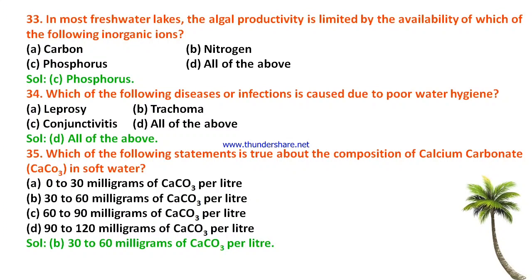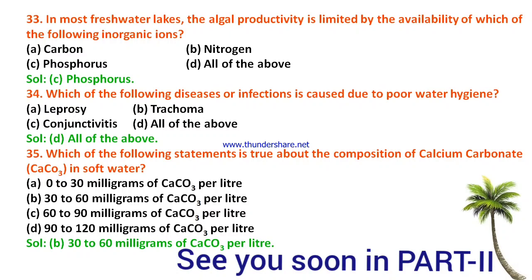Question 35: Which statement is true about the composition of calcium carbonate in soft water? The options are 0–30 mg/L, 30–60 mg/L, 60–90 mg/L, or 90–120 mg/L of calcium carbonate per litre. The correct answer is 30 to 60 milligrams of calcium carbonate per litre is the composition in soft water.